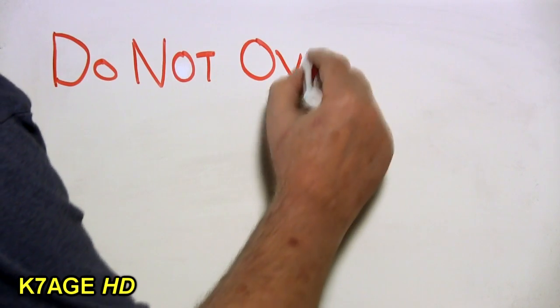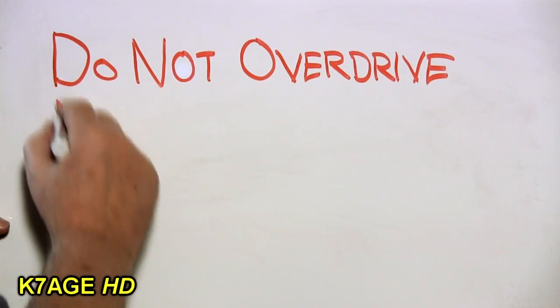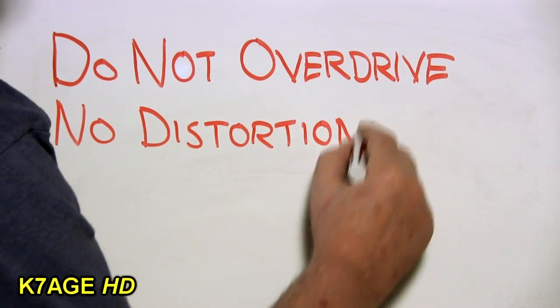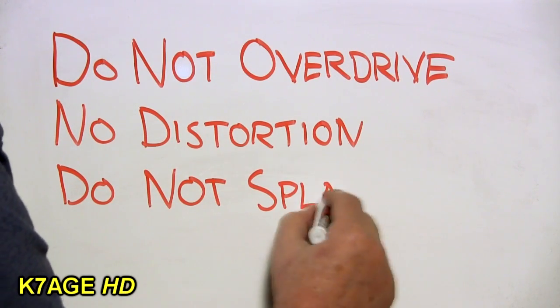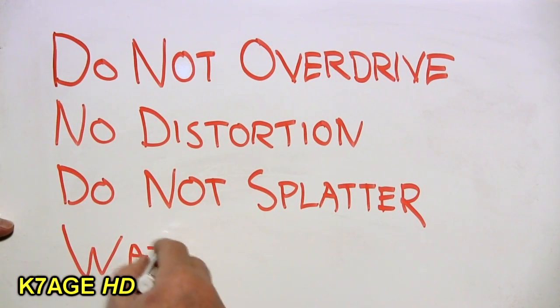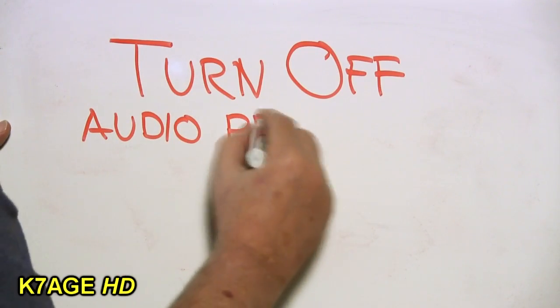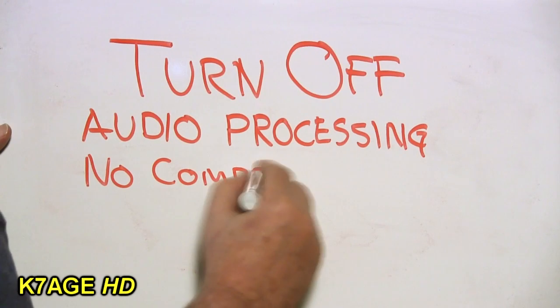Okay once we have our cables connected now we need to think about setting the audio level. We do not want to overdrive the transmitter. We do not want to cause distortion. We do not want to cause splatter on the band. So you want to watch your ALC your automatic level control indication on your meter. You'll have to look at your manual to see how to set this properly. We want to turn off any audio processing. That means any audio compression. Turn it off.